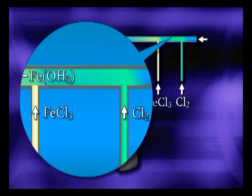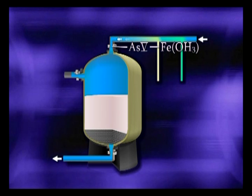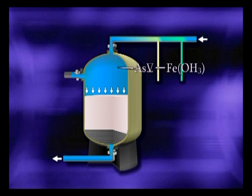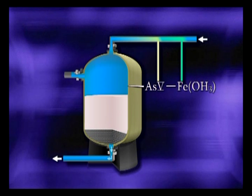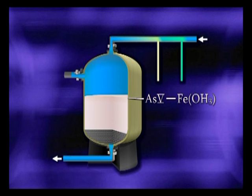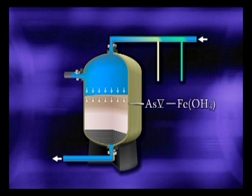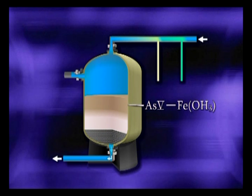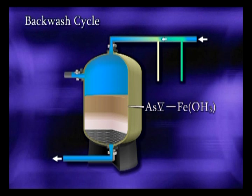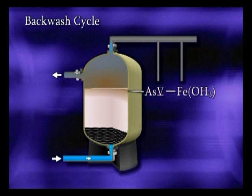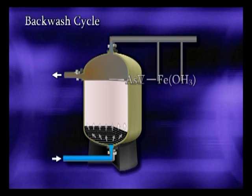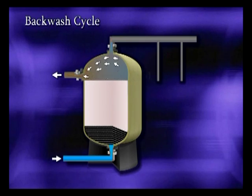The hydroxides and arsenic-laden water are held in a retention tank to allow the co-precipitation and adsorption process to occur. The arsenic and iron precipitates are then filtered from the water — in this example by a pressure filter vessel. The filters load with precipitates until partially loaded, then are backwashed. The backwash waste is directed to either a sanitary sewer or dedicated waste system.